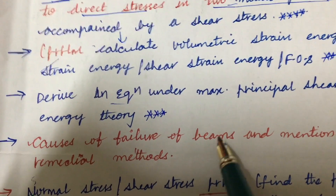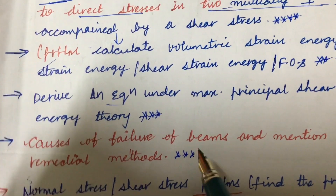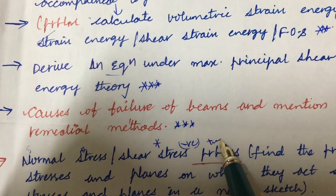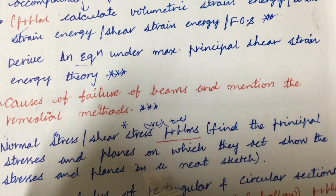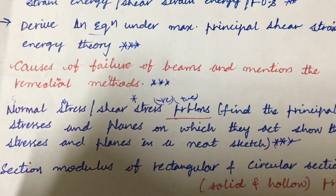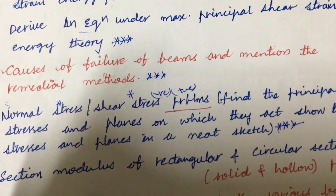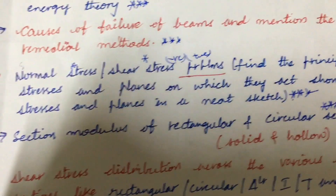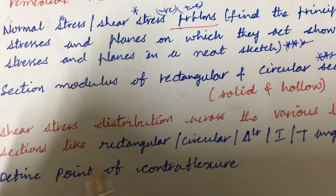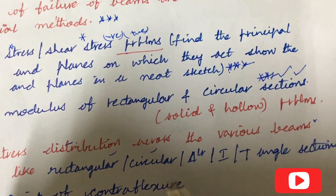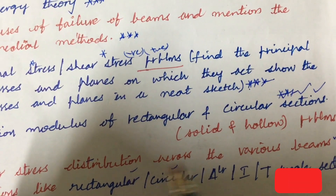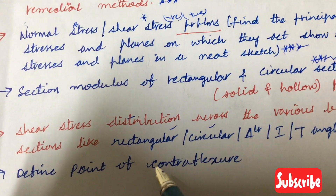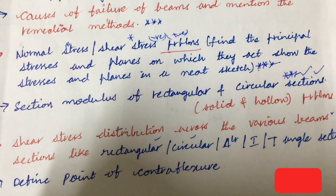Derive an equation under maximum principal or shear strain energy theory — derivations on causes of failure of beams and remedial methods may also be asked. Normal stress and shear stress problems involving positive and negative stresses: find the principal stresses and planes on which they act, and show the stresses and planes in a neat sketch — draw only in pencil and carry your calculator. Also important: section modulus of rectangular and circular cross-sections, including solid and hollow sections. Shear stress distribution across various beam sections — rectangular, circular, triangular, I, T, and angle sections — will definitely be asked. A small definition like 'define the point of contraflexure' may also appear.